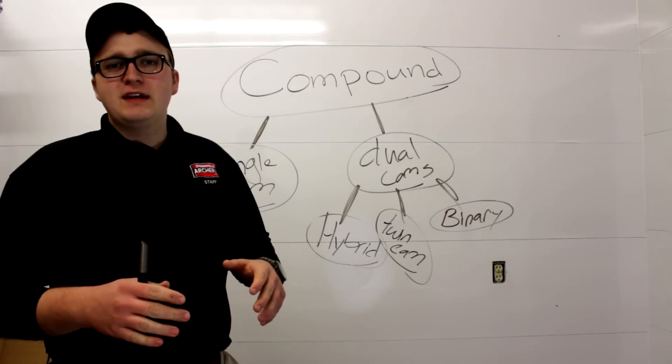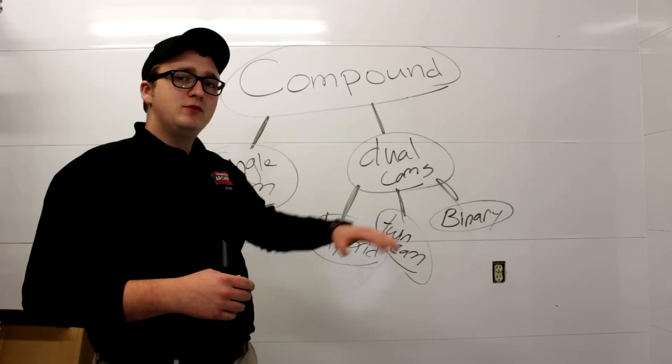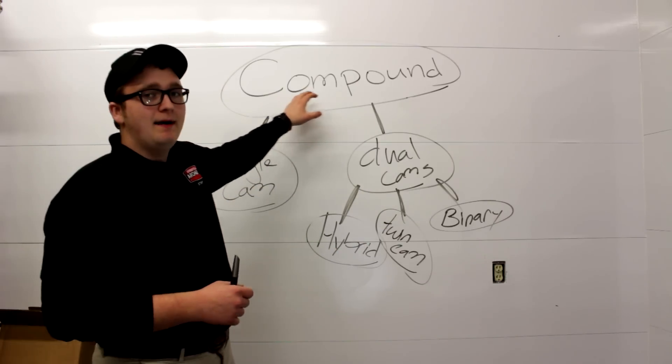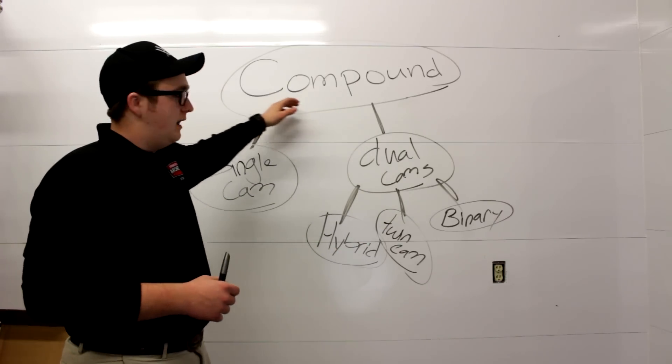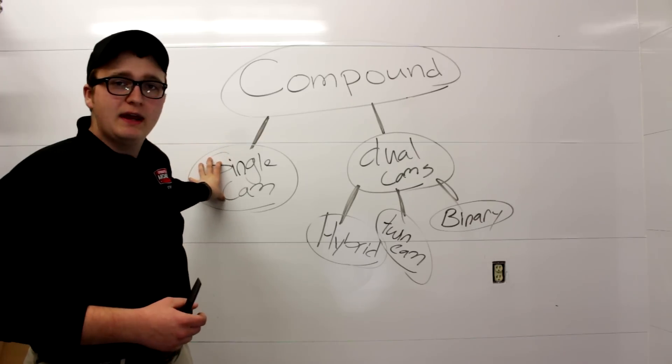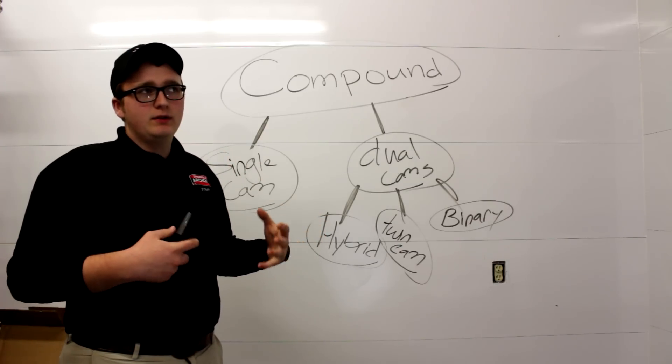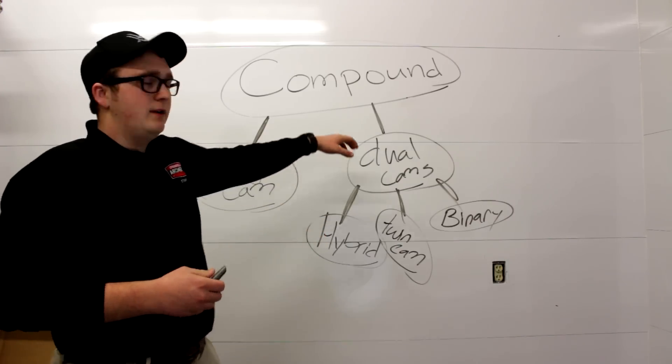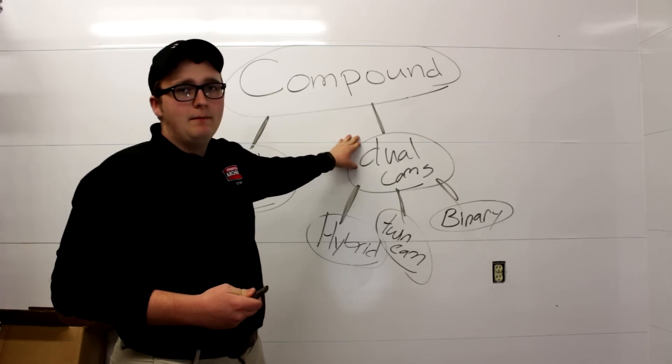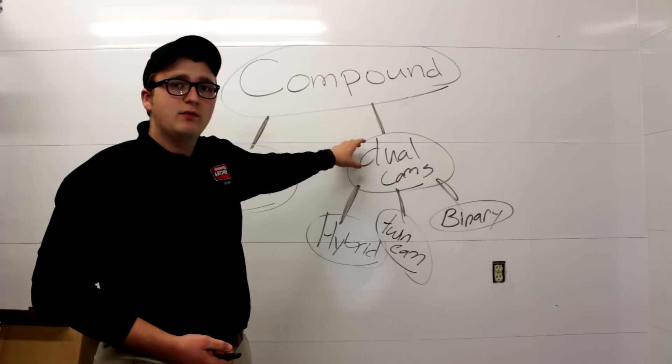To better understand these different types of cam systems I drew this spreadsheet here. So we've got our compound bow as we know it today. Branched off to the left here I've got the single cams. The single cam is kind of in a category all itself. It's technically only got one true cam. Over here you've got your dual cam. Top and bottom both are cams.